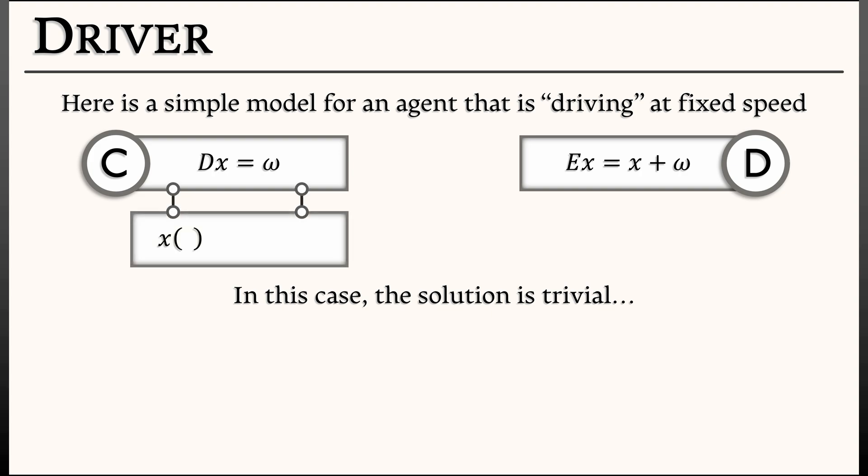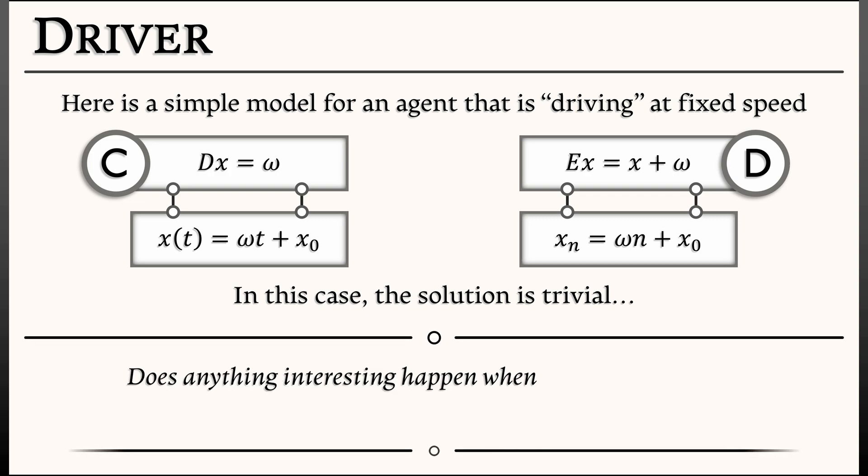we can get the explicit solutions. In continuous time, x of t is omega t plus x naught, the initial position. In discrete time, xn is equal to omega times n plus x naught. What are you doing? You're just moving down the road at some fixed speed.